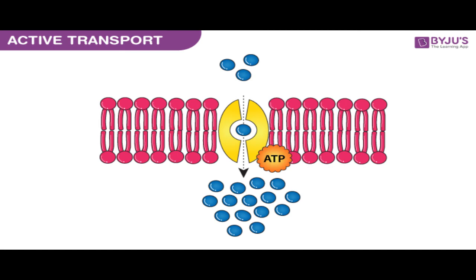Active transport involves a specific carrier protein that spans through the membrane. Only a few drugs that resemble the structure of naturally occurring metabolites can pass through these carriers. This mechanism is energy dependent and is capable of moving drugs against the concentration gradient, from a region of low drug concentration to one of higher drug concentration.